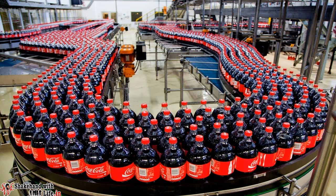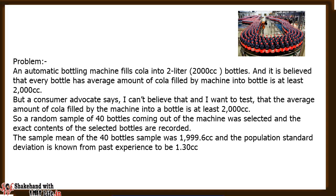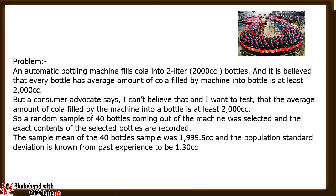Let's take a problem of an automatic cola filling plant and understand how the Z test can be used to test a hypothesis about the population mean and help in decision making. In an automatic cola filling plant, a bottling machine fills cola into two-liter bottles. It is believed that every bottle has an average amount of cola of at least 2000 cc, but a consumer advocate wants to test whether the average amount of cola filled by the machine is truly at least 2000 cc.